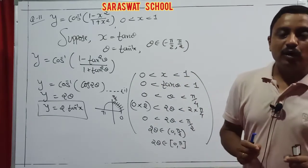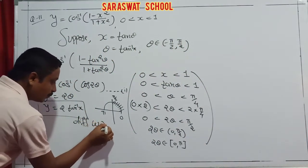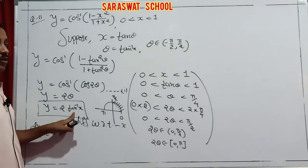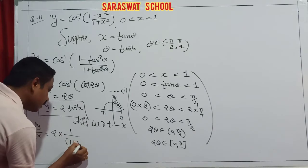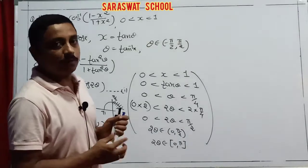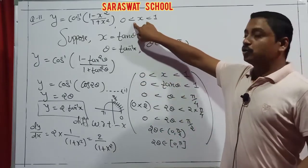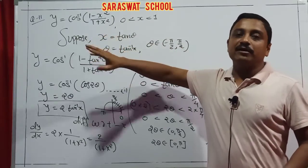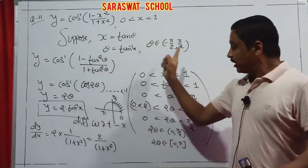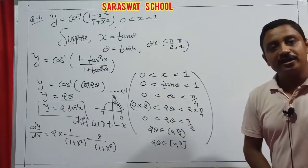Now start the derivative. Differentiation with respect to x: dy/dx = 2 · (1/(1+x²)). So dy/dx = 2/(1+x²). This numerical is happily done. Again: if this condition is not given, we cannot use this method — go direct derivative. If condition is given, apply suggestions, verify the range belongs to cos⁻¹, and that's your answer.